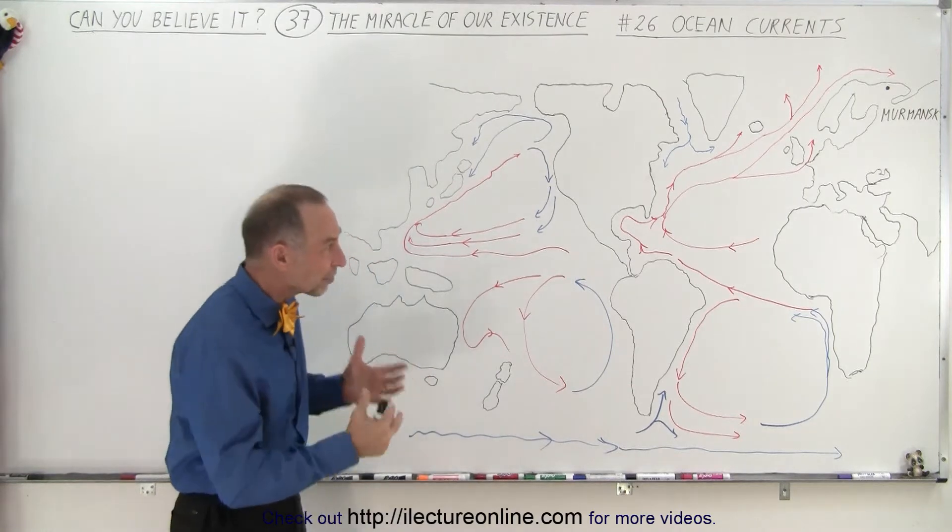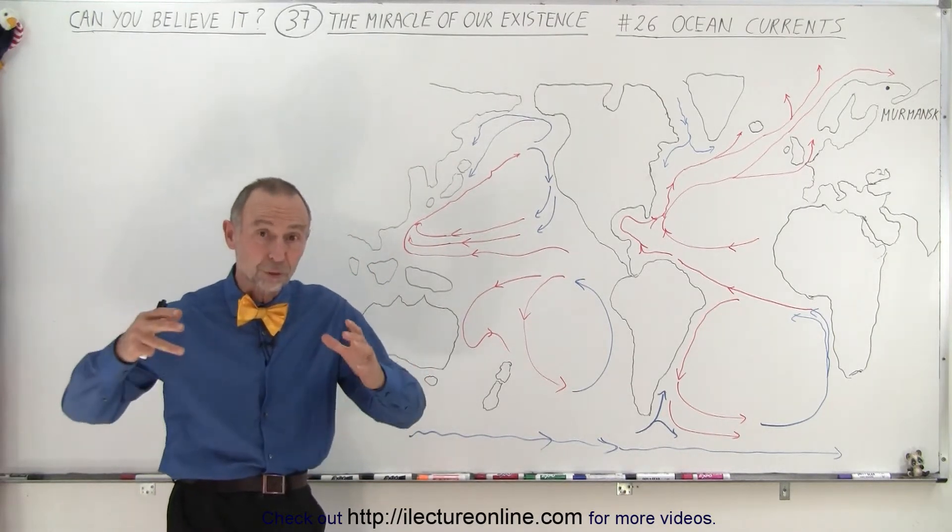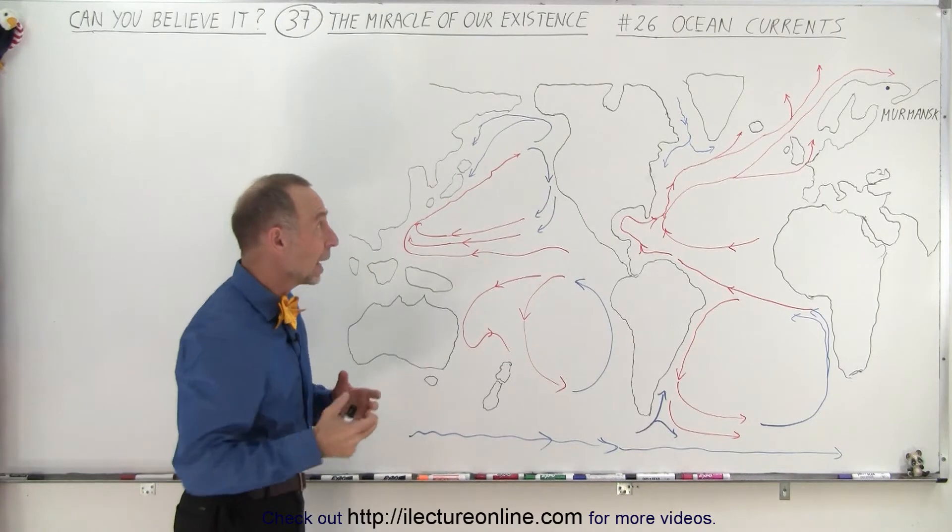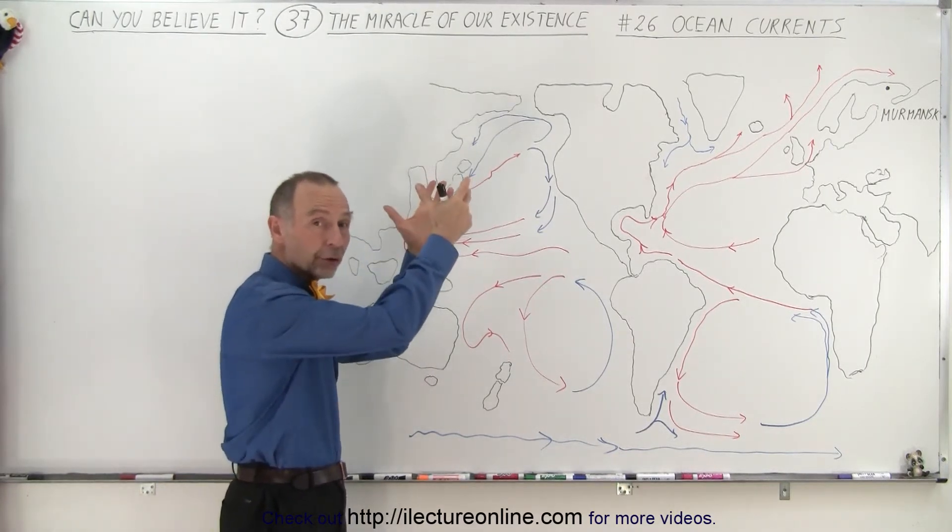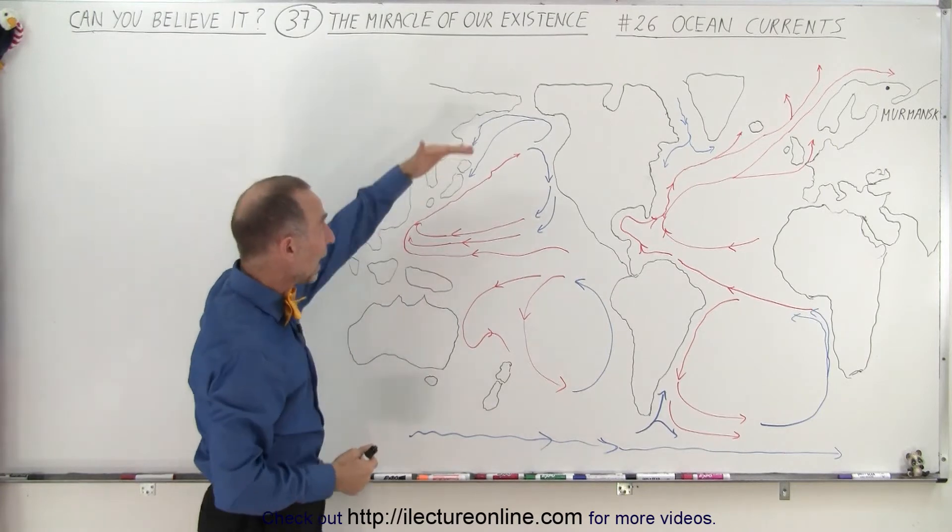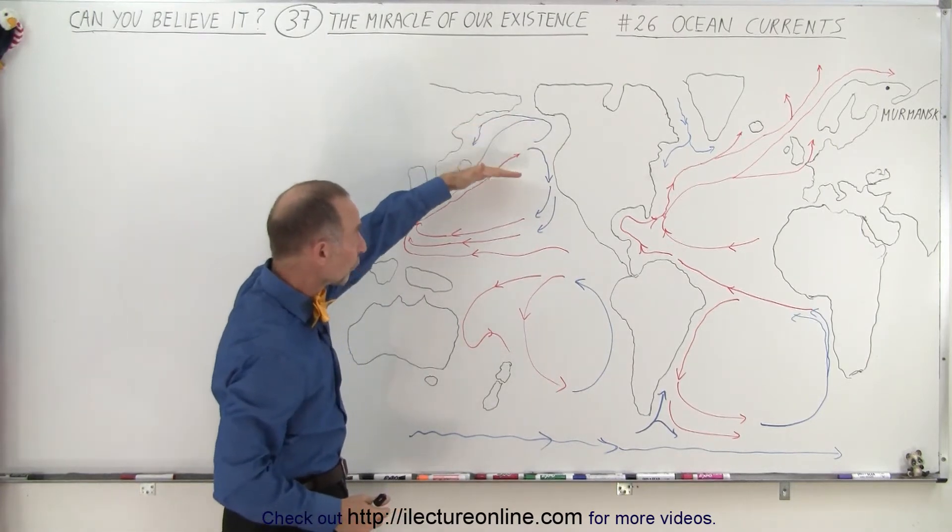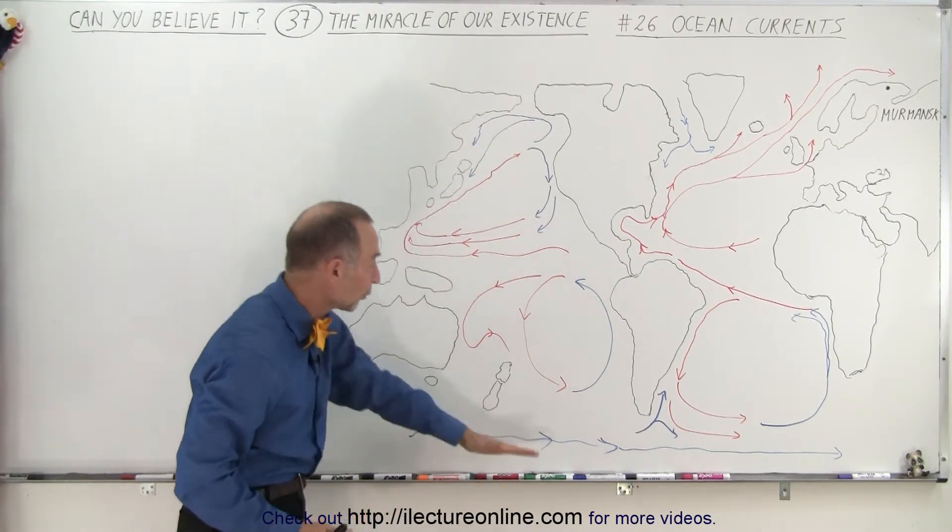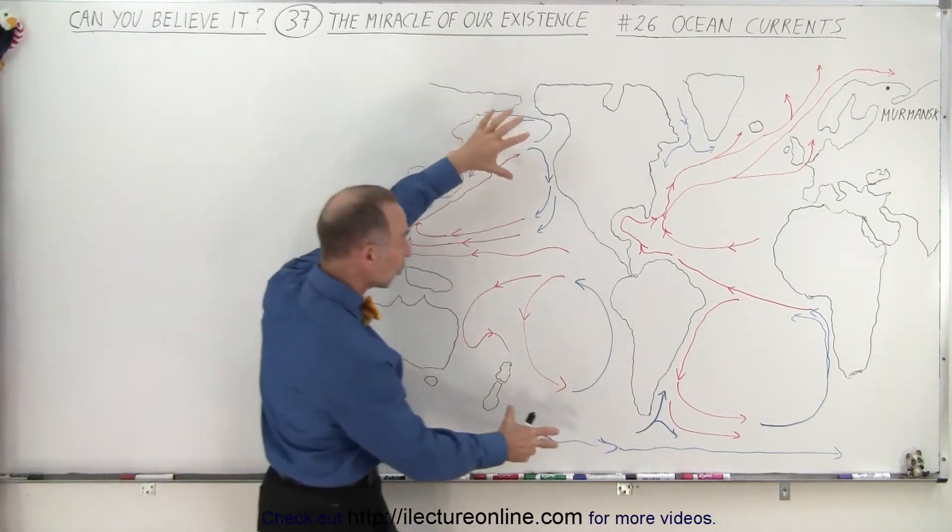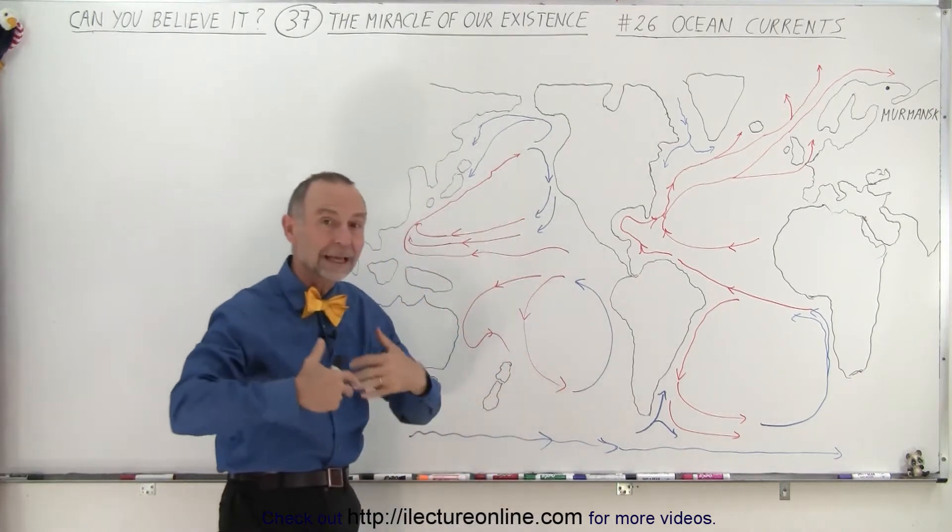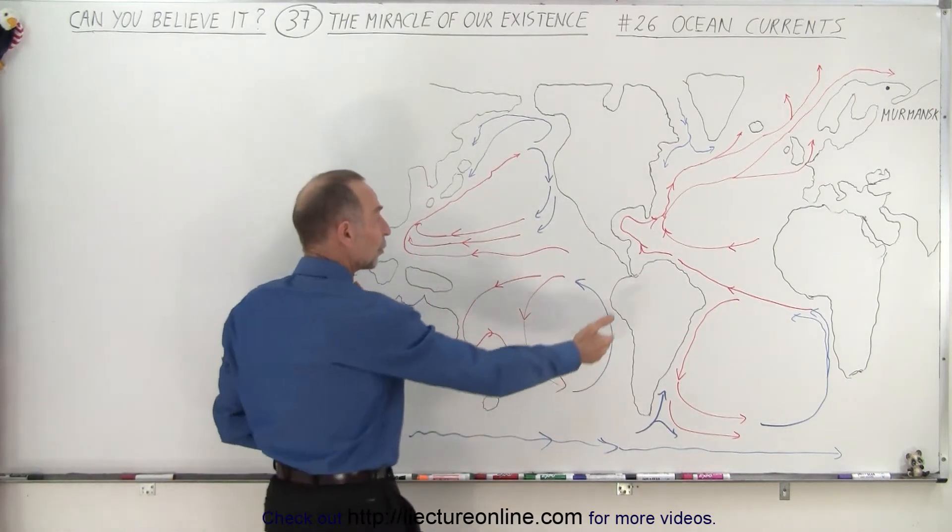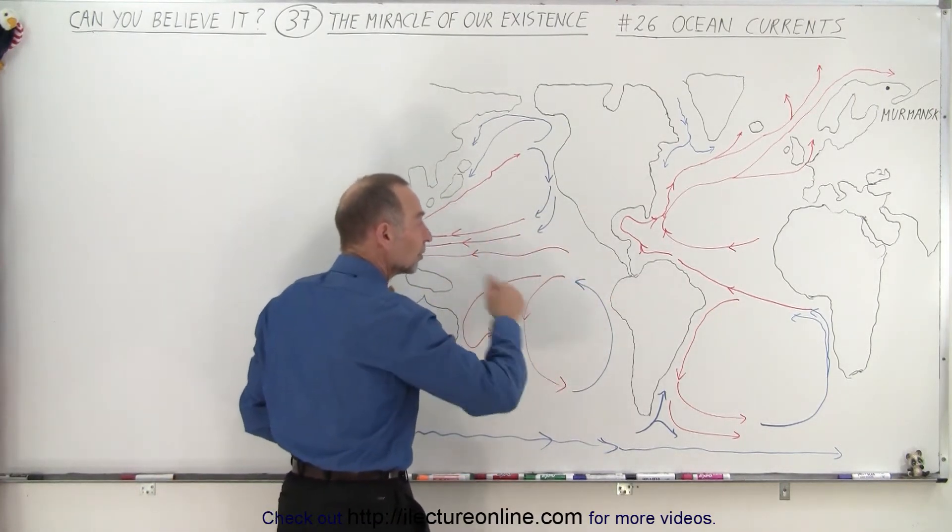Ocean currents are vast conveyor belts that bring warm water from where it's warm to where it's cold on the Earth, and take cold water from where it's cold to where it's warm. So as the cold ocean currents go further south in the northern hemisphere and further north in the southern hemisphere, they go from regions where it's frigidly cold to regions where it's very hot, and that's where they warm up, and then of course as warm water continue the cycle.